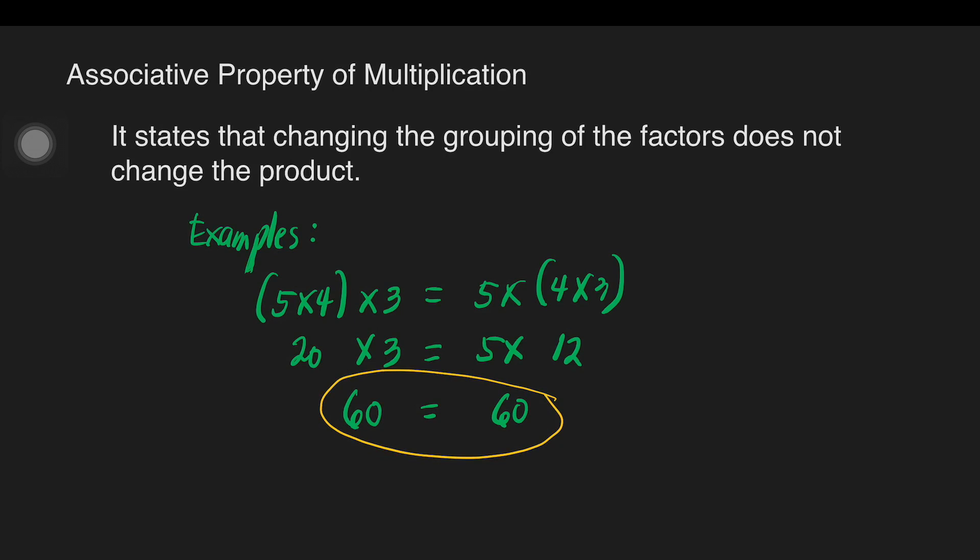Whether you have different groupings — in the first one, we grouped 5 and 4; on the other side, we grouped 4 and 3 — we still arrive at the same answer, which is 60.